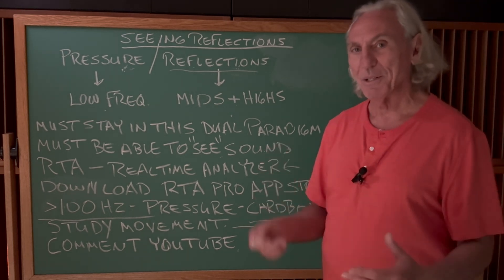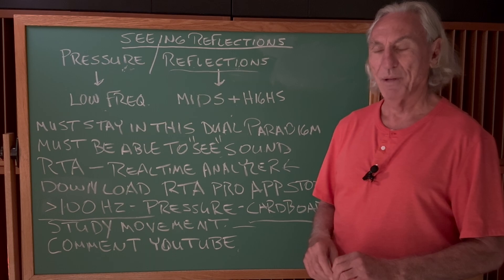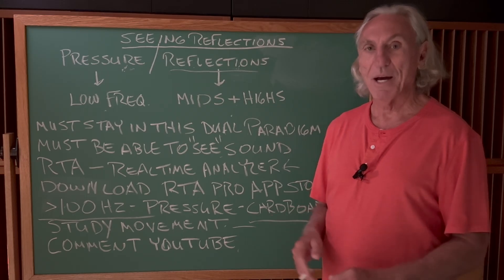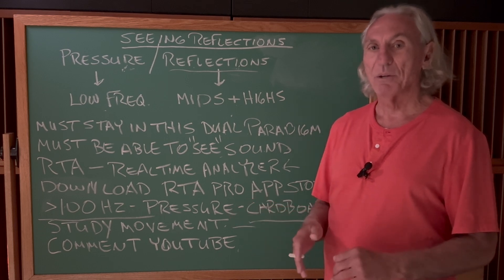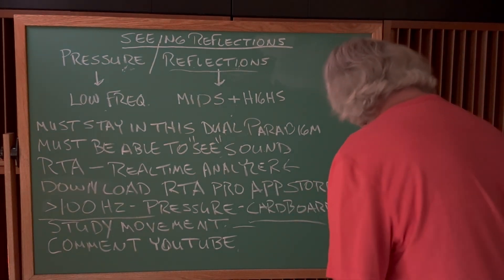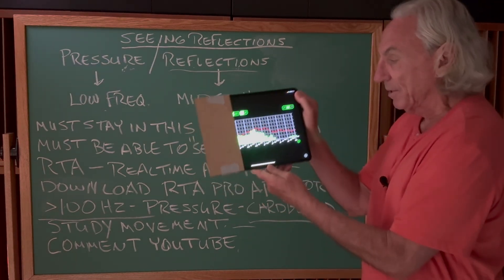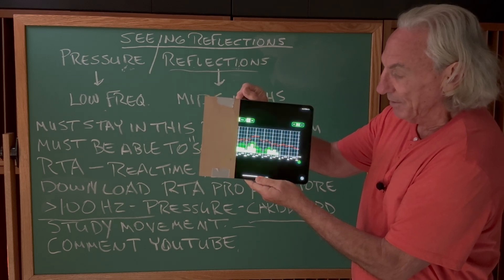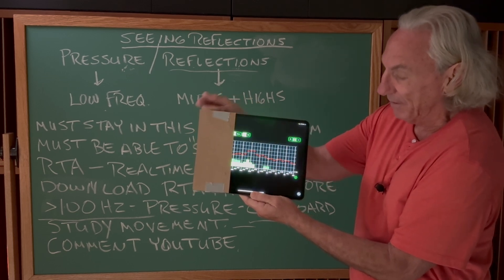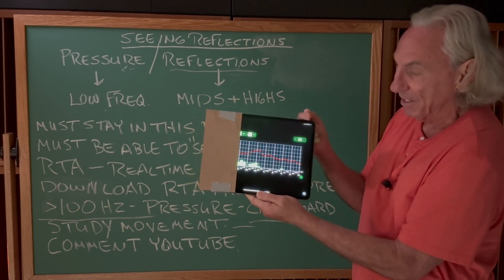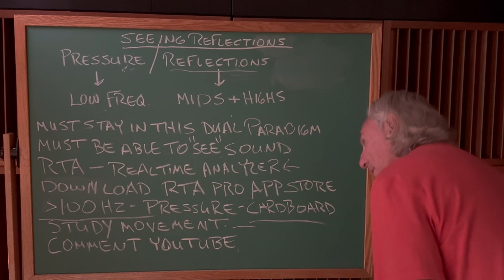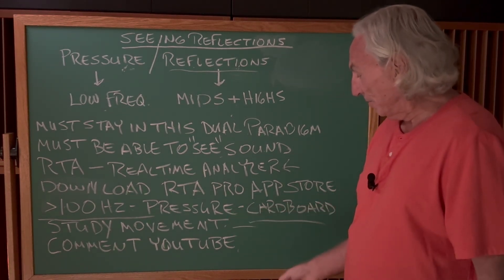We're going to be able to see sound so we can understand it. We're going to use a visual aid — an RTA, a real-time analyzer. Here's a prompt for the app you can download from the Apple Store: RTA Pro, it's always green, so just go for the green. Download RTA Pro on your phone. Then take a piece of cardboard and cover below 100 hertz. For reflections, we're going to focus on everything above 100 hertz — pressure was below 100. So cover that portion of the screen so we can focus on reflections.